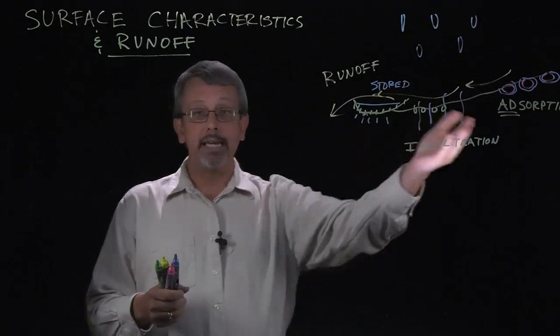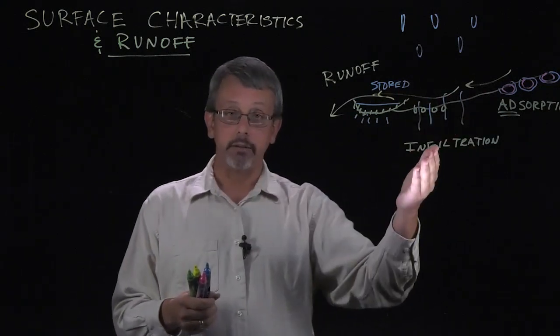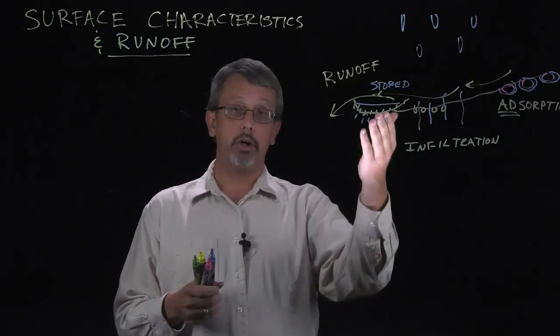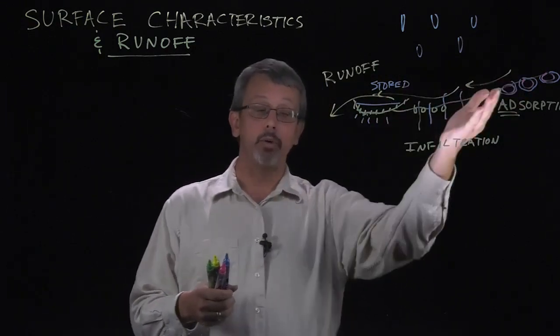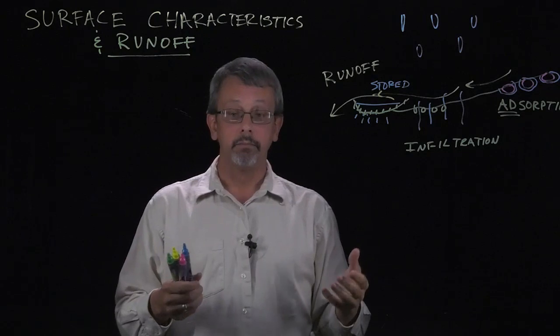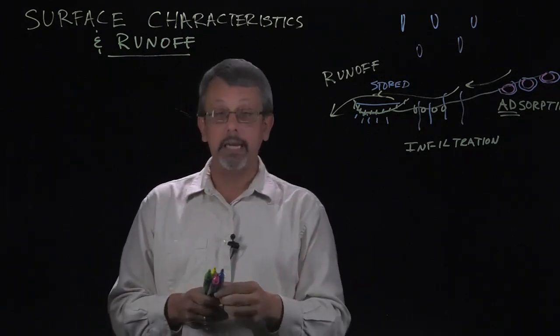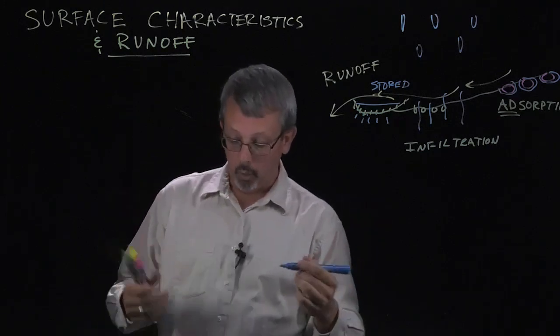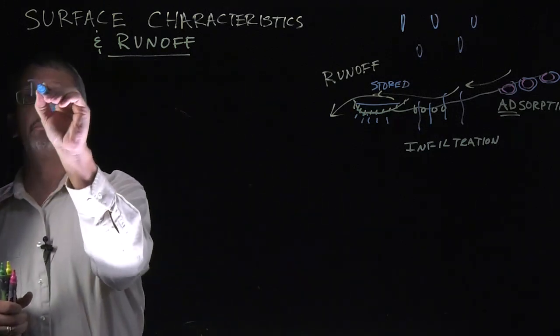So there's a number of characteristics of the surface that affect how much runoff occurs and how much of these other things occur to the water. Primary characteristics, characteristics we're interested in looking at and measuring. One of these characteristics is something called permeability.